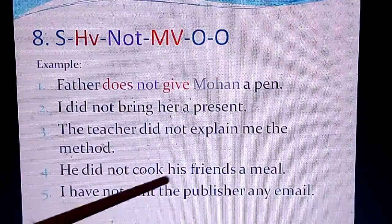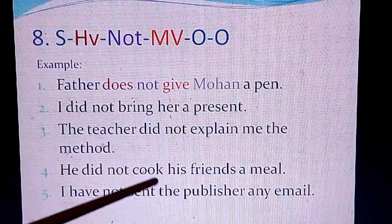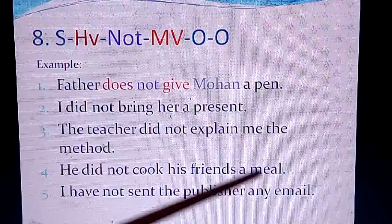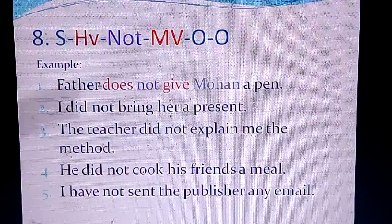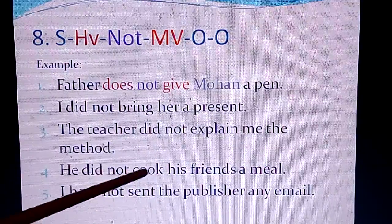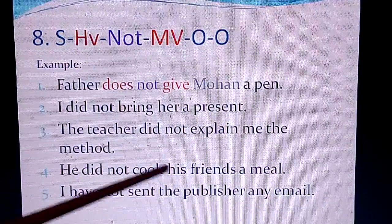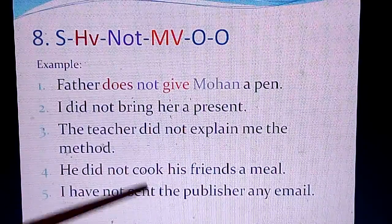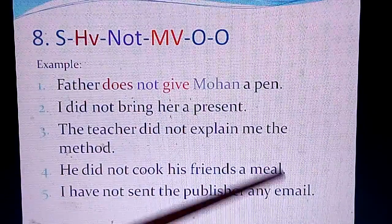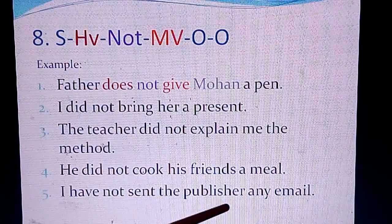You can see the three key questions: what, who, and whom. When we put these questions to the main finite verb — whether in a negative or affirmative sentence — and get answers on both sides, then we can identify the subject, objects, and other elements. Remember these three questions — what, who, and whom — to find subjects and objects.